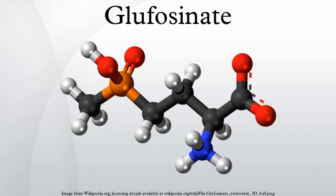Genetically modified crops resistant to glufosinate were created by genetically engineering the bar or PAT genes from Streptomyces into the relevant crop seeds. In 1995, the first glufosinate-resistant crop, canola, was brought to market, and it was followed by corn in 1997, cotton in 2004, and soybeans in 2011.